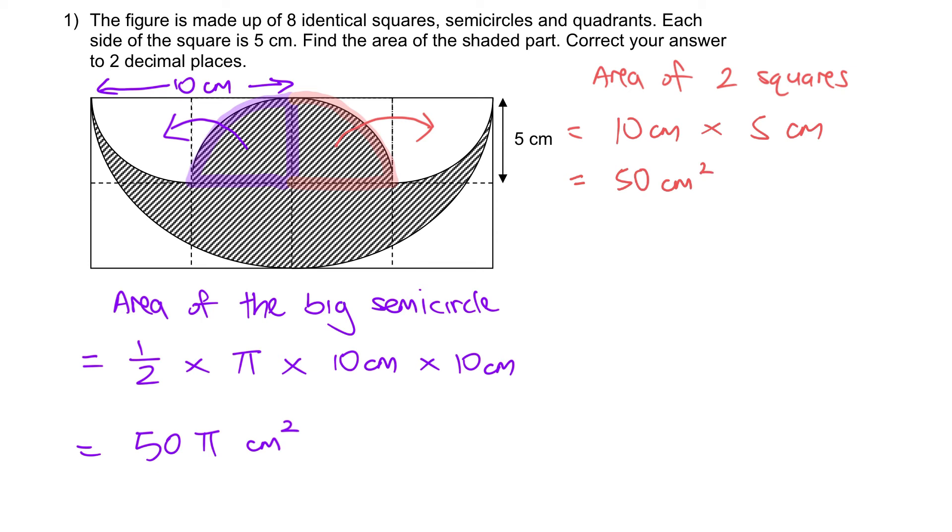The last step, I am just going to find the area of the shaded part. That will be 50π cm² minus 50 cm². Key all this into the calculator.